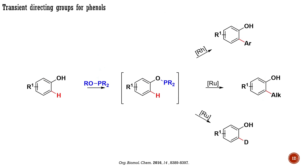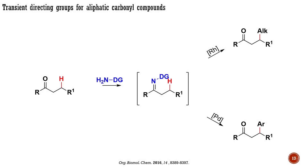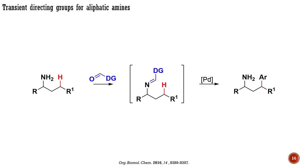Applying the same concept, it is possible to selectively functionalize phenols using transient directing groups based on phosphonite. In this case, a reversible transesterification at phosphorus generates phosphonites derived from the initial phenol, with phosphorus serving as a directing group for the catalyst. In situ formation of Schiff bases was also applied for C-H transformations of aliphatic carbonyl compounds, including both aliphatic aldehydes and ketones. A similar strategy can be applied to C-H transformations of aliphatic amines, using a directing group possessing an aldehyde functionality.